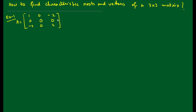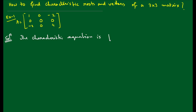So let's get started. We have to find the characteristic roots. You already know that to find the characteristic root, we need to solve the characteristic equation. The characteristic equation is: determinant of (A minus λI) equals zero.